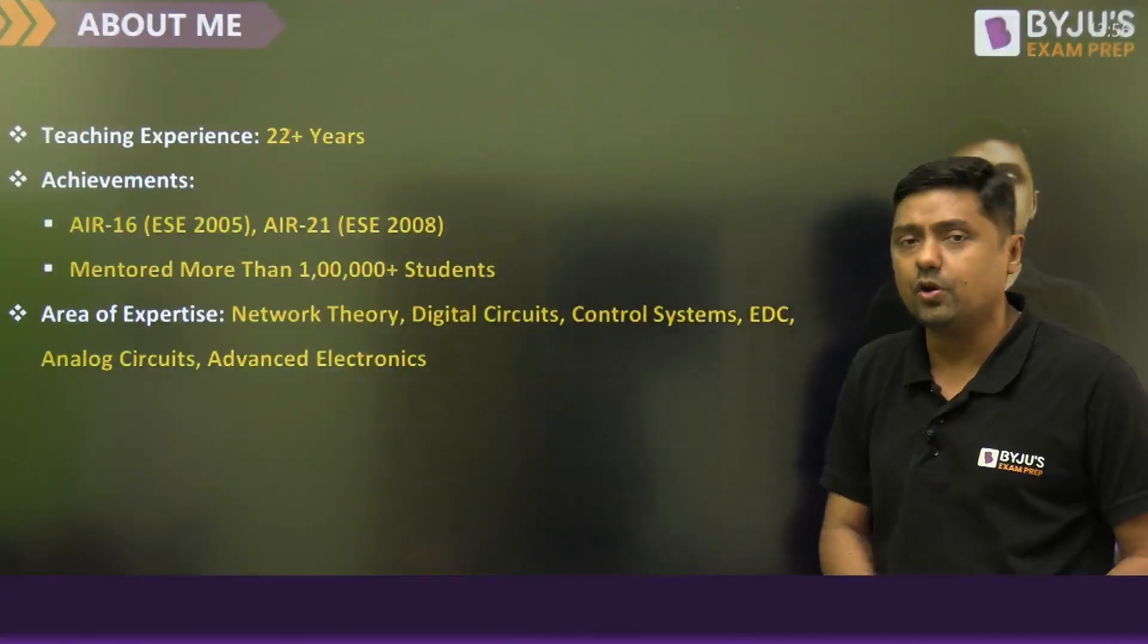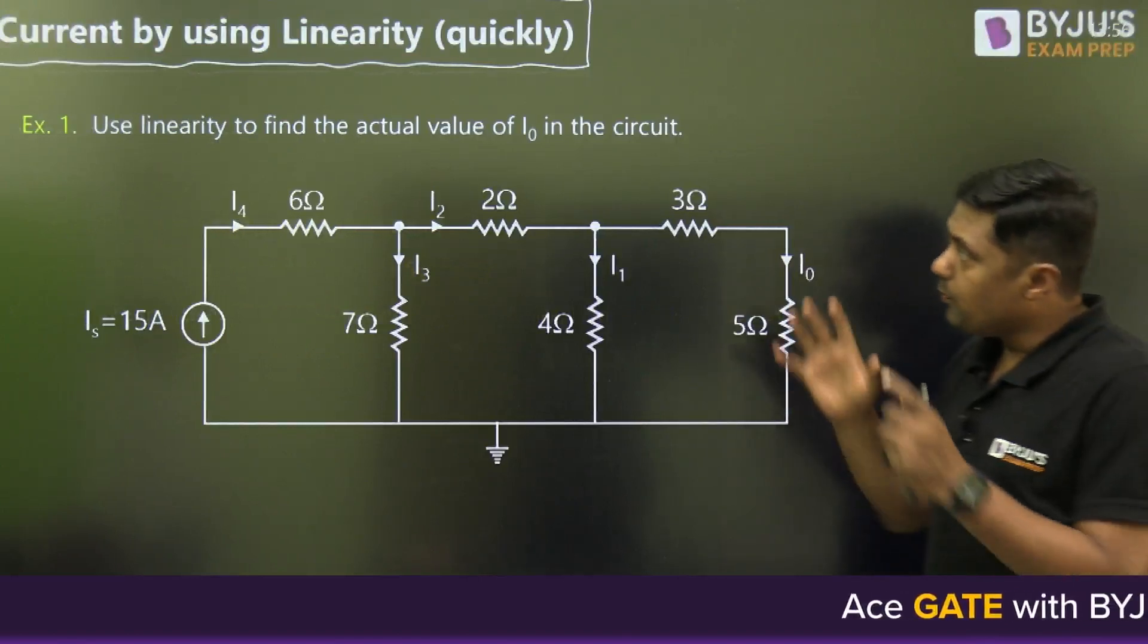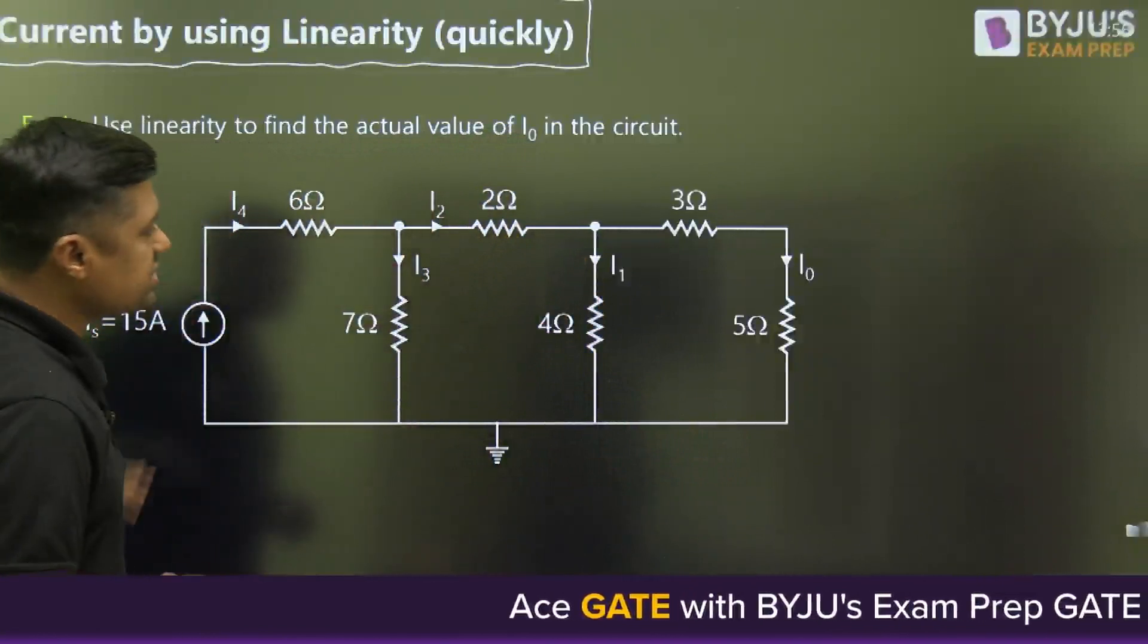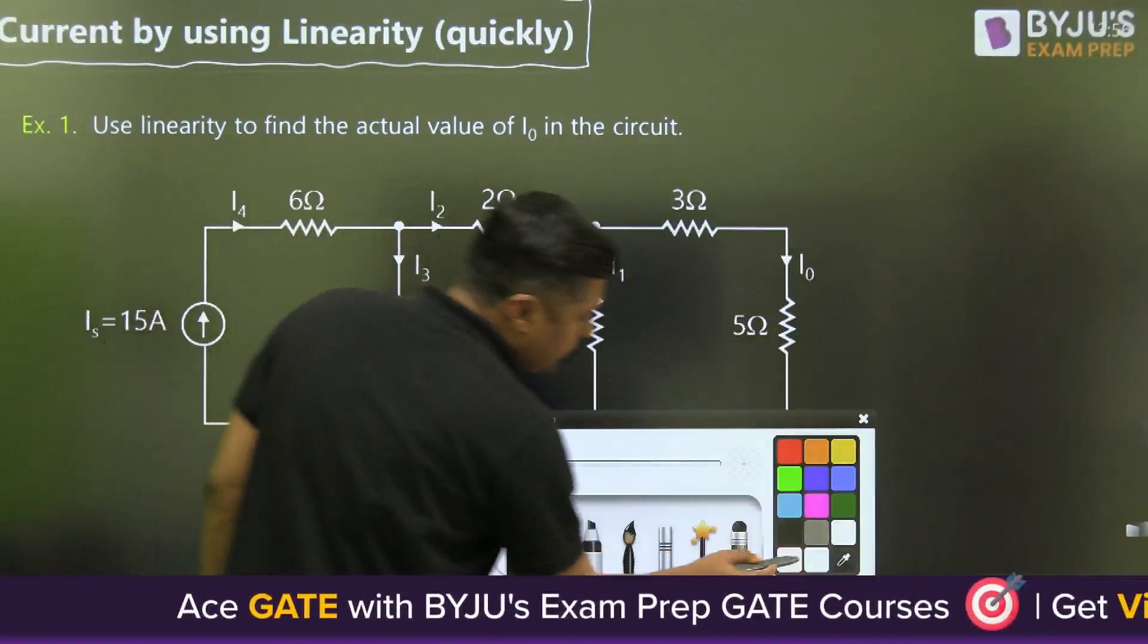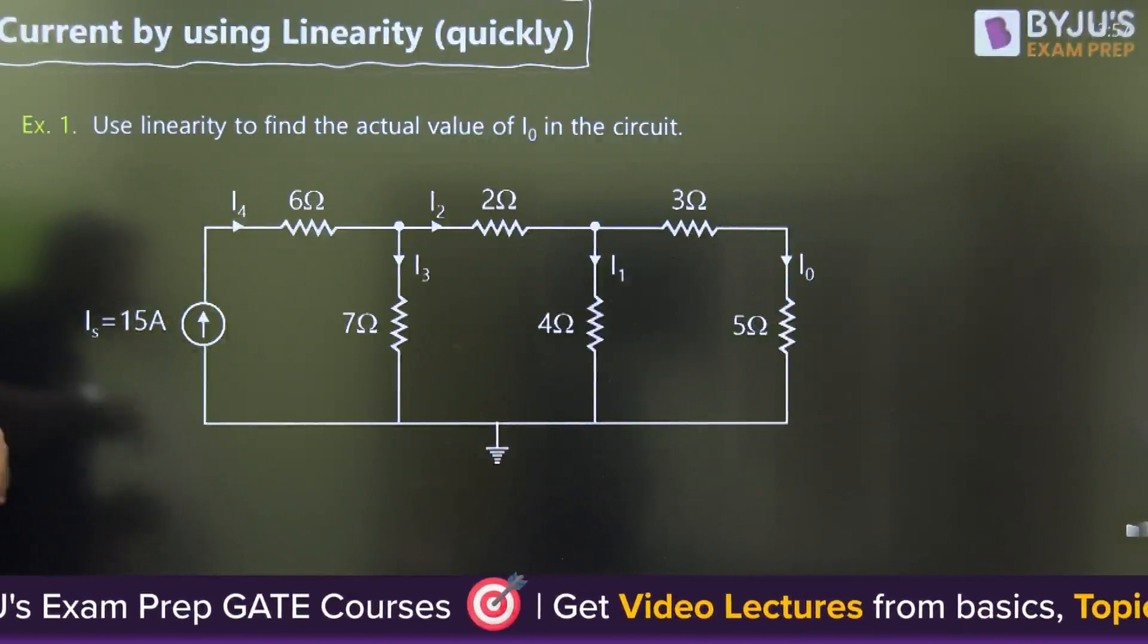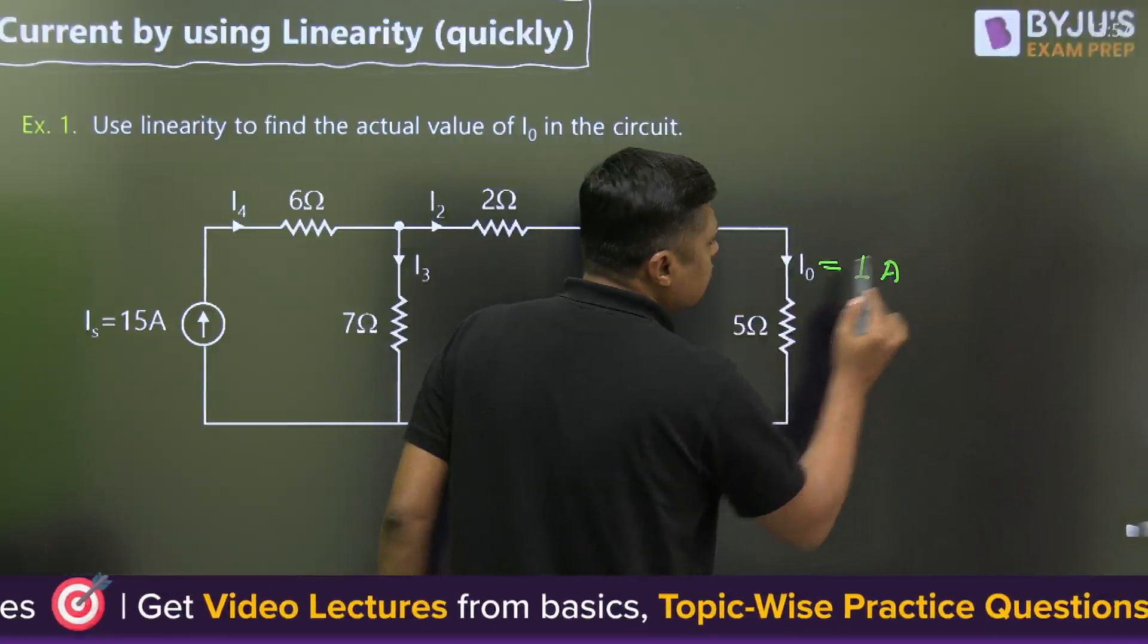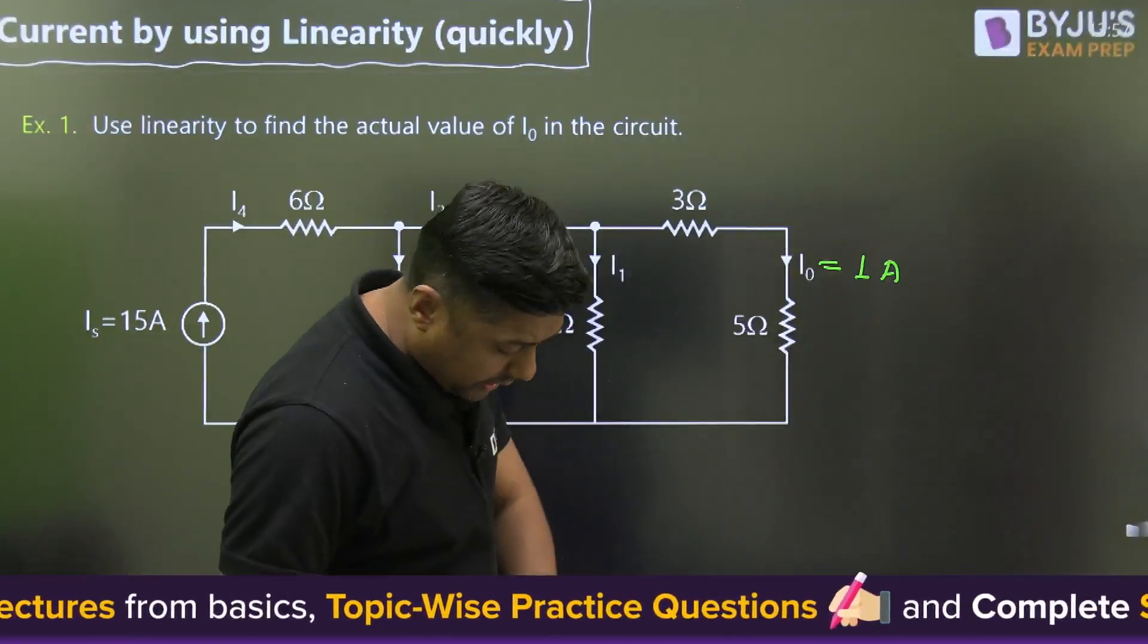Now we will solve two questions using the concept of linearity. This is a purely resistive, linear circuit, and I am going to find I₀ using this technique. This is a 15 ampere current source. We are assuming I₀ equals 1 ampere. If I₀ is 1 ampere, then what can we do?